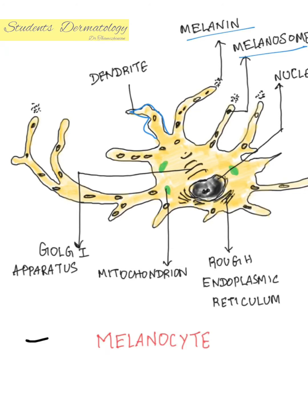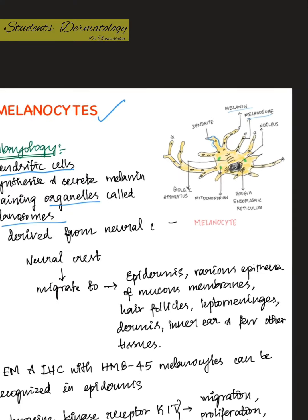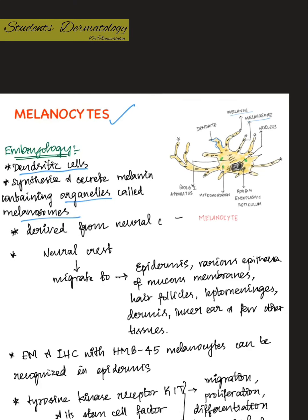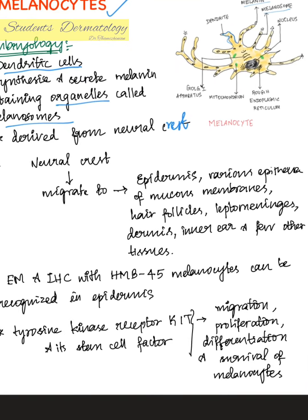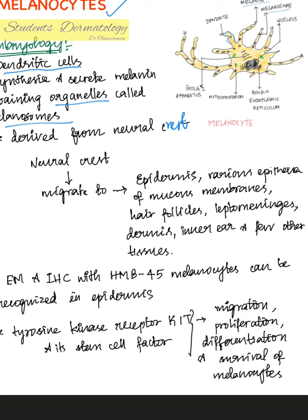During development, melanocytes are derived from the neural crest. The neural crest, apart from migrating to the epidermis, also migrates to various other structures during development, like the epithelia of mucous membranes, hair follicles, leptomeninges, dermis, inner ear, and a few other tissues.